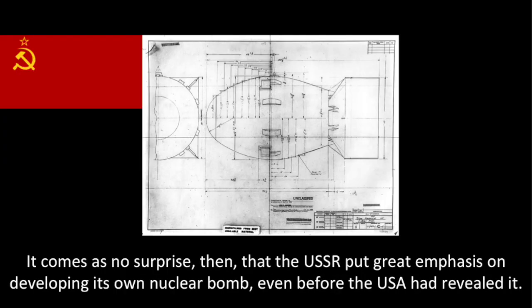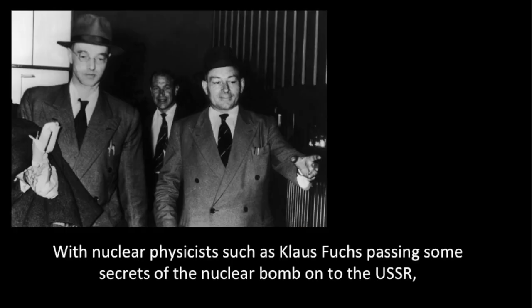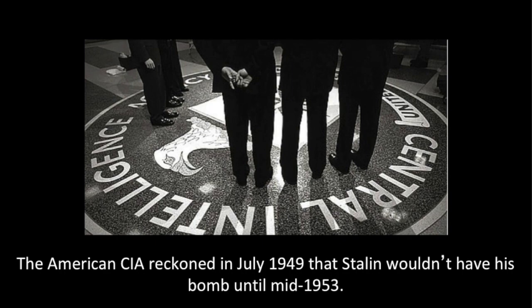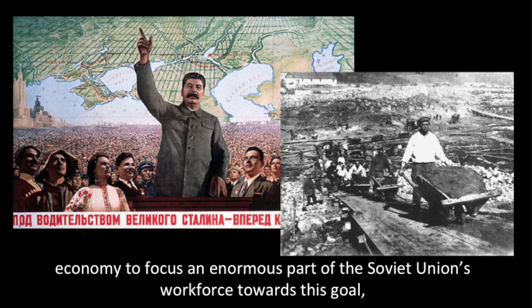It comes as no surprise, then, that the USSR put great emphasis on developing its own nuclear bomb, even before the USA had revealed it. The USSR used espionage to spy on the US Manhattan Project, with nuclear physicists such as Klaus Fuchs passing some secrets of the nuclear bomb onto the USSR. The Soviet Union managed to copy the ideas of the USA's plutonium bomb, but it was still a long way from being a reality. The American CIA reckoned in July 1949 that Stalin wouldn't have his bomb until mid-1953, but the Americans underestimated the USSR's resourcefulness and the power of the command economy to focus an enormous part of the Soviet Union's workforce towards this goal.